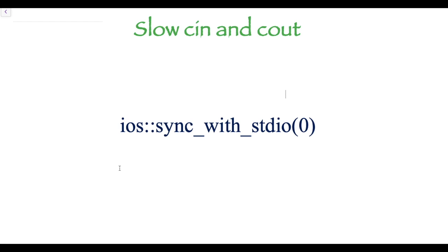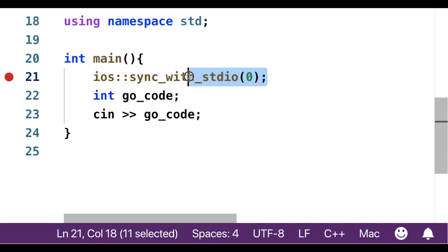First is slow cin and cout. Cin and cout are not slow by default. What makes them slow is the synchronization with C buffer. If we use this at the beginning of our code, then we will make cin and cout as fast as scanf and printf, but we will no longer be able to use printf or scanf. Like this, this is the beginning of our code. If we put this statement here, then our cin will become as fast as scanf and cout will become as fast as printf.